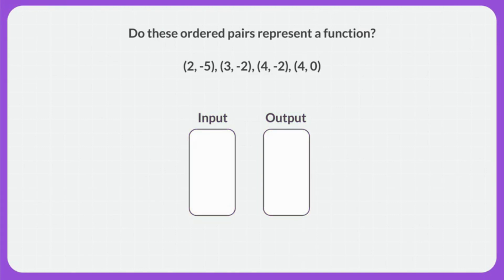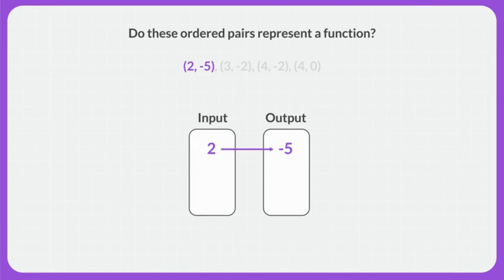Now I can take a closer look at each of these ordered pairs. In each ordered pair, the x value is the input and the y value is the output. So I'll start by taking this first ordered pair and putting it on my map. This ordered pair has an input of 2 and an output of negative 5. I'll use an arrow to show that this input produces this output.